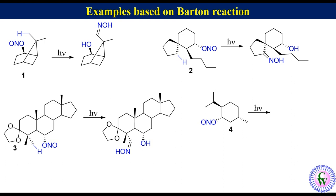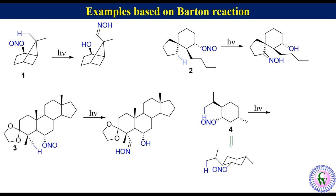Example 4. This molecule also has four delta carbons with hydrogen. In this structure, it is difficult to find which delta hydrogen is closest in space to the nitrite. It will be clear if we convert this structure into the stable chair form. Now we can see that the delta hydrogen of the isopropyl CH3 is closest. So compound 4 after Barton reaction will be converted into this oxime.